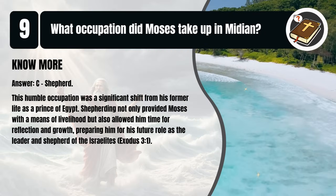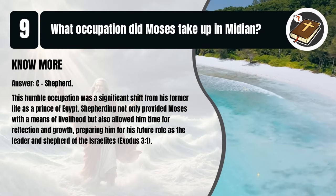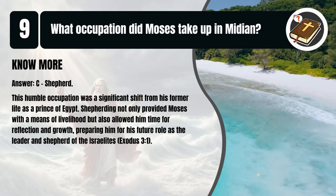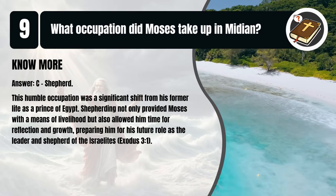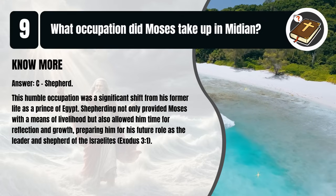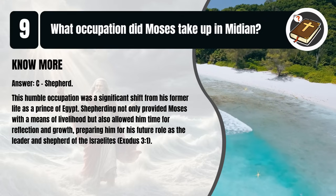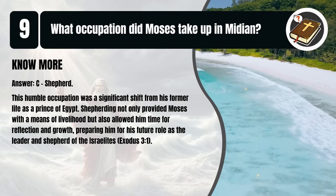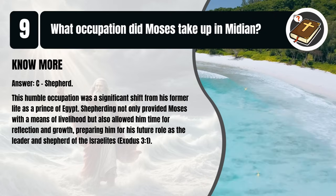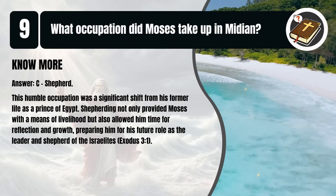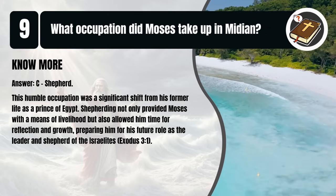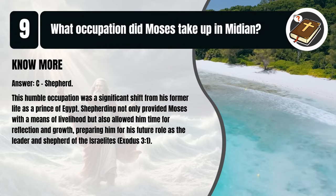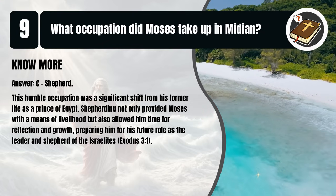That's C. Shepherd. This humble occupation was a significant shift from his former life as a prince of Egypt. Shepherding not only provided Moses with a means of livelihood but also allowed him time for reflection and growth, preparing him for his future role as the leader and shepherd of the Israelites. Exodus 3:1.